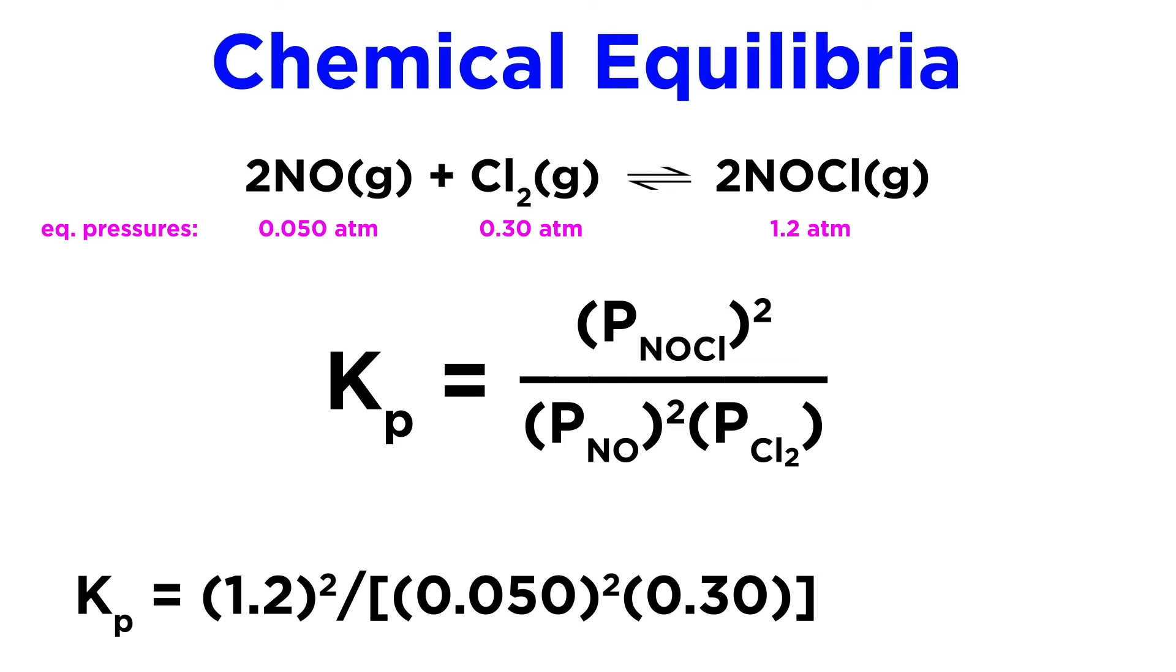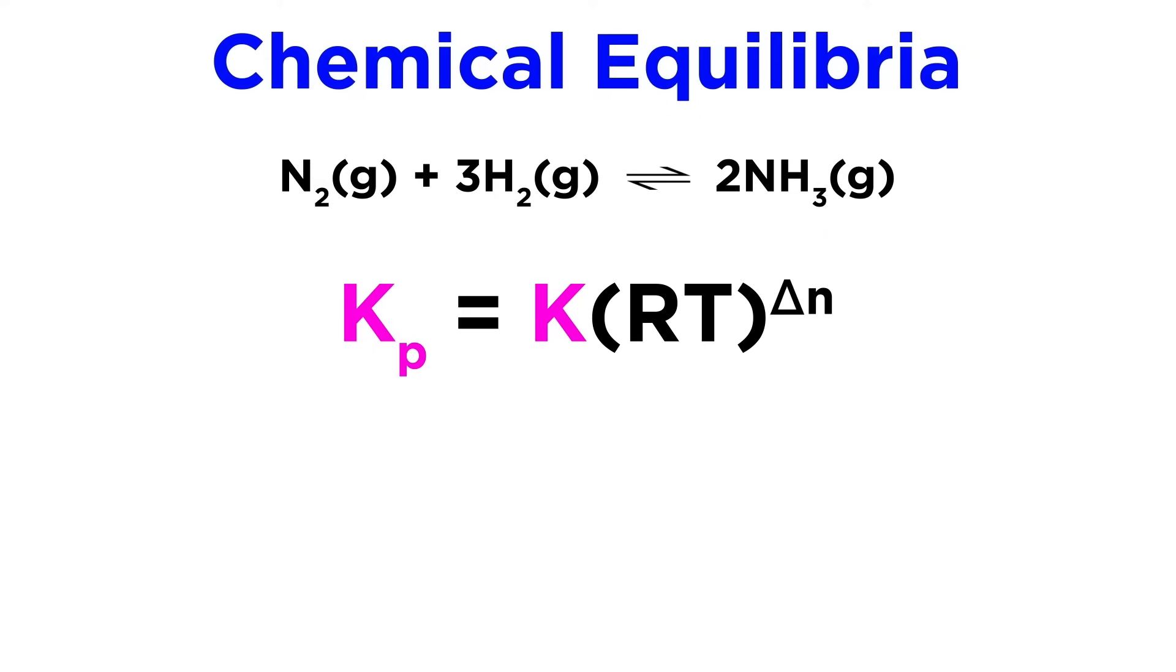Now all we have to do is plug in the values we were given for the partial pressures at equilibrium and do the arithmetic. 1.9 times 10 to the third is what we should get. We should note that K and Kp are not identical.